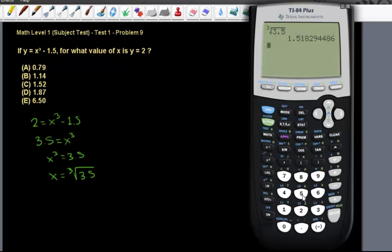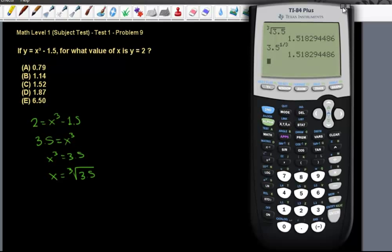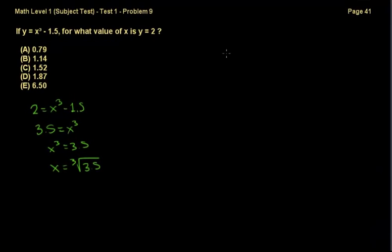Let me show you a useful tip: to find the root of any number, you just raise it to the inverse of the root you're looking for. So for the cube root of 3.5, you raise 3.5 to the power of 1/3. If you want the 50th root, raise it to 1/50. Entering 3.5^(1/3) gives the exact same value. The correct answer is C.